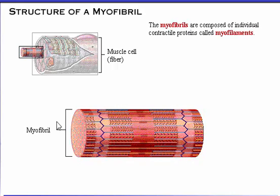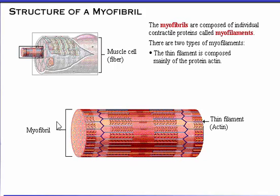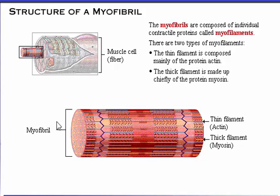The myofibrils packed into a muscle cell are composed of individual contractile proteins called myofilaments. There are two types of myofilaments: the thin filament, composed mainly of the protein actin, and the thick filament, made up chiefly of the protein myosin. Details of thick and thin filament structure are covered in another topic — the sliding filament theory.